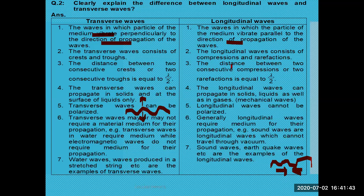In longitudinal waves, compressions and rarefactions are produced. In a compression, it is a higher pressure area where particles are closer to each other. In a rarefaction, it is a low pressure area where particles are away from each other. The distance between two consecutive nodes is half of the wavelength.